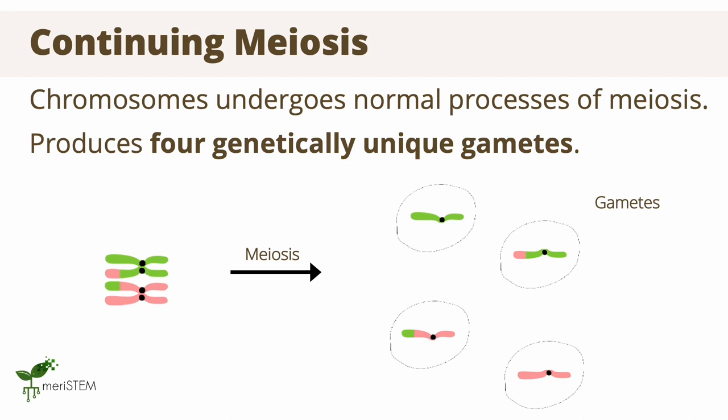At the end of meiosis, this results in four gametes being produced from the original homologous pairs. Each of these gametes is slightly different to the other due to the process of crossing over.